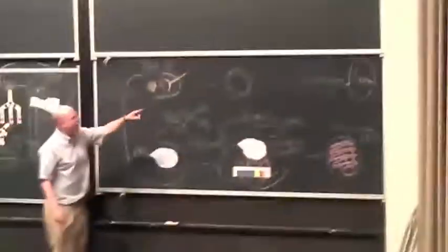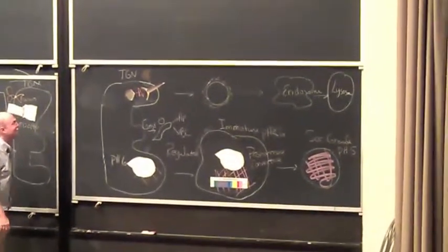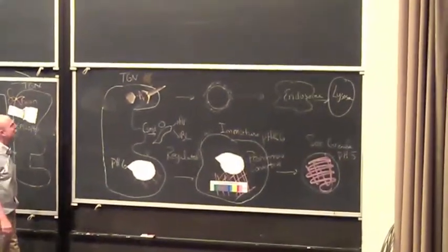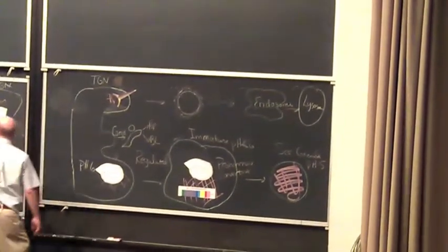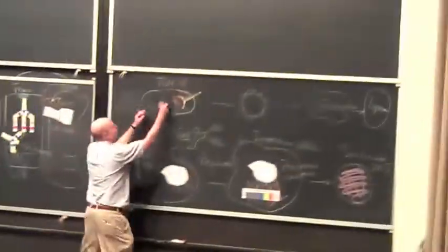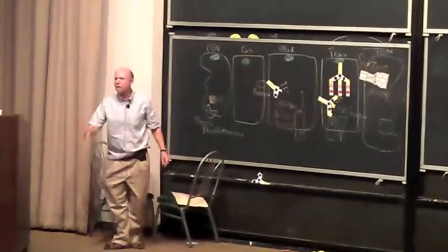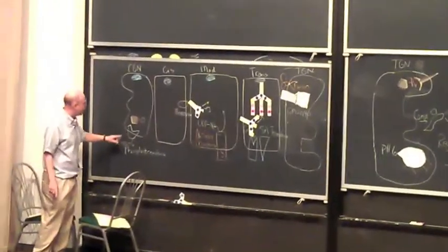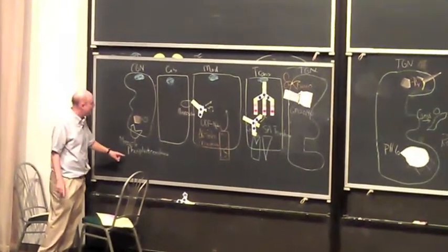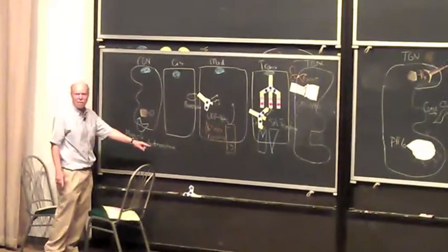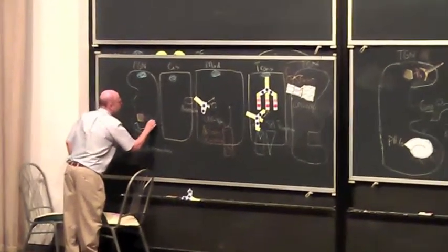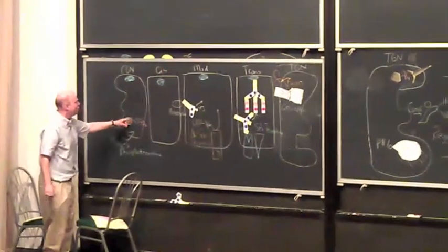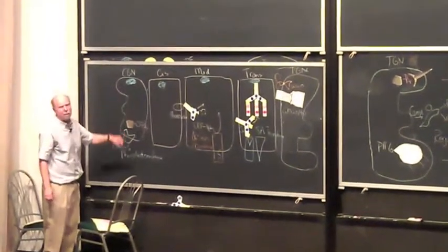So those enzymes have to get into the lumen of the lysosome. And the way this works is the lysosomal enzymes are recognized in the cis-Golgi. Oh, I have one in the cis-Golgi. There you go. They're recognized in the cis-Golgi over here as being special proteins. There's a special enzyme called the mannose-6-phosphate phosphotransferase. And it transfers, eventually, a phosphate residue to mannose residues on the oligosaccharide side chain.